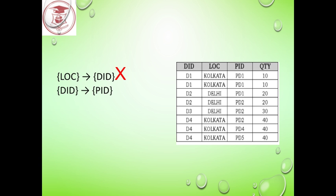Now we check whether d_id functionally determines p_id or not. For d_id = d1, we have the same p_id value in the first row. However, for the second, third, and fourth rows, the same d_id value d2 has different p_id values — pd1 and pd2. So d_id → p_id is not possible in this relation.